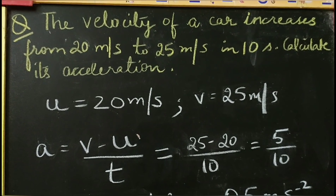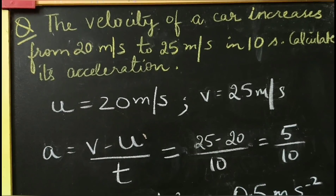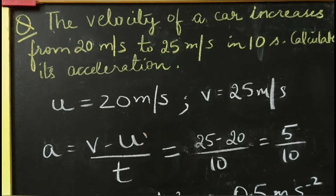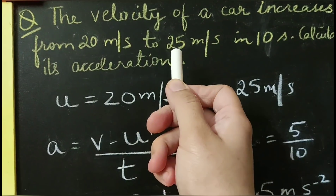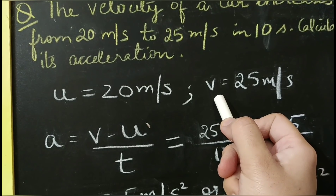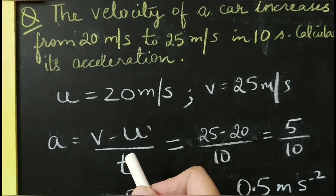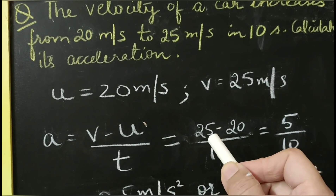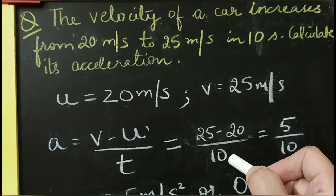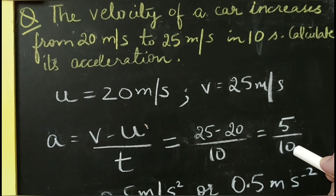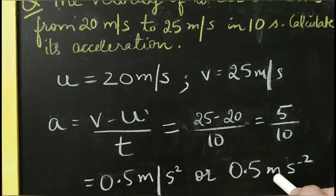Another example: the velocity of a car increases from 20 meters per second to 25 meters per second in 10 seconds. Calculate its acceleration. Initial velocity u is 20 meters per second, final velocity v is 25 meters per second, and t is 10 seconds. Using a equals v minus u divided by t: v minus u is 5 divided by 10, giving acceleration as 0.5 meters per second squared.